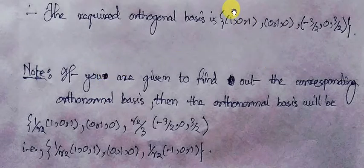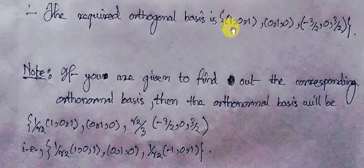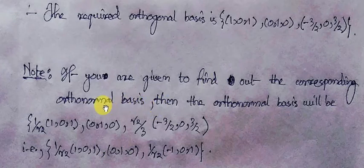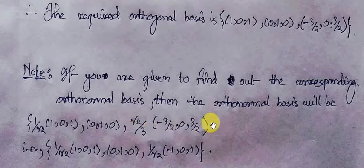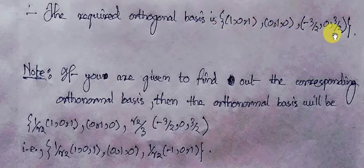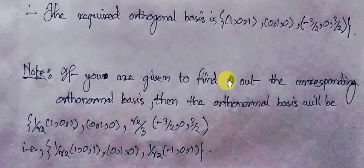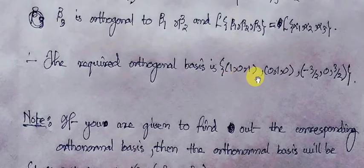This is the orthogonal basis, and we have to convert this orthogonal basis set to an orthonormal basis set. To make this orthogonal collection into an orthonormal set of vectors, we merely have to divide each and every vector by its norm.